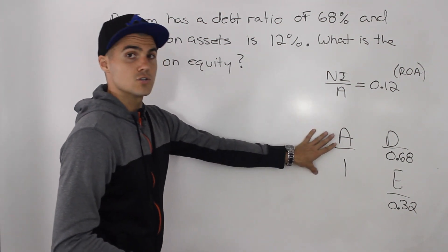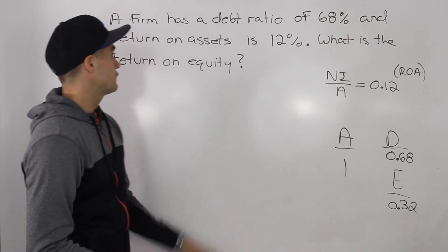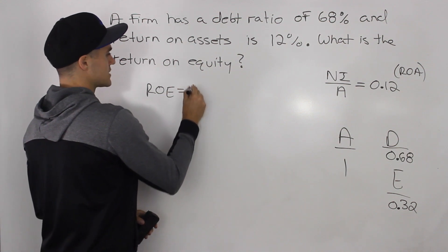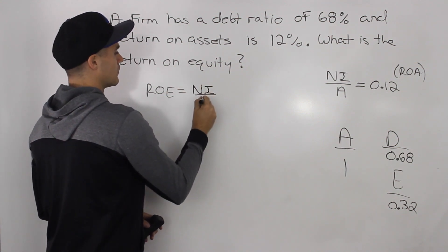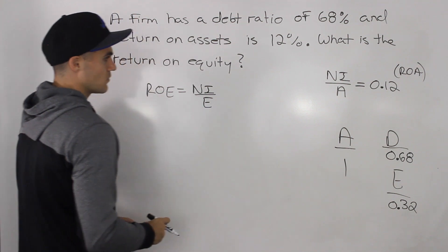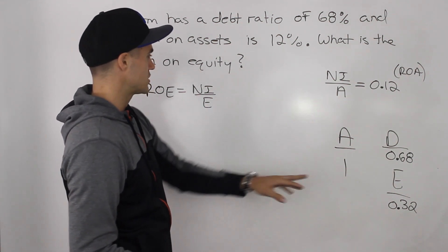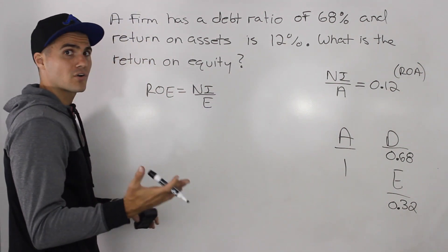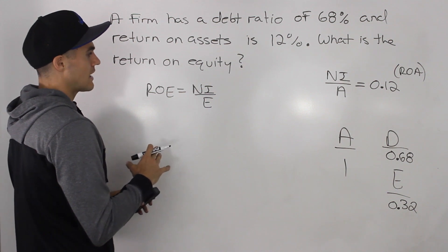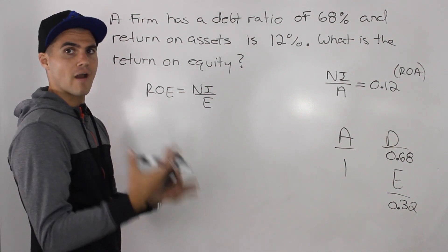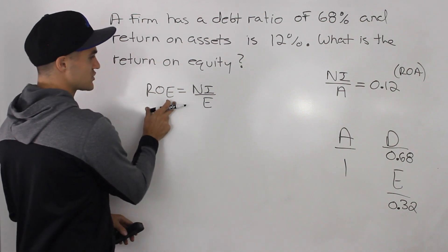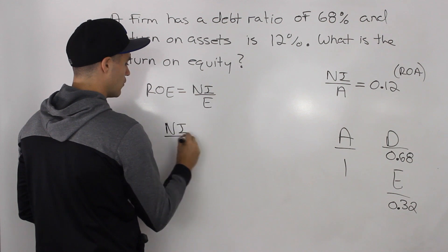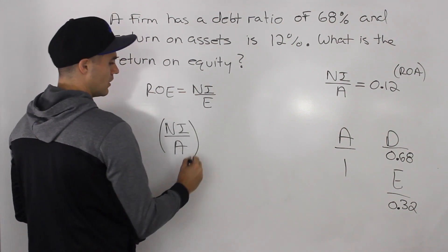So given these two pieces of information, we have to find what the return on equity is. Now return on equity, we know that's equal to what? Net income over equity. So what we have to do is we have to use these two pieces of information to somehow get to this ratio. Well, if you remember in a previous question, I mentioned that you can manipulate fractions to get to a certain fraction that you want.